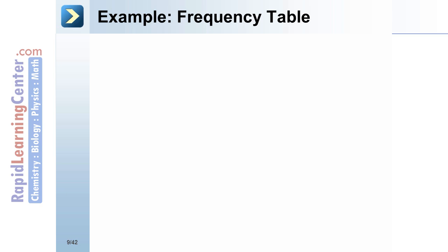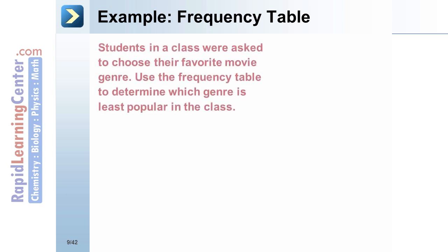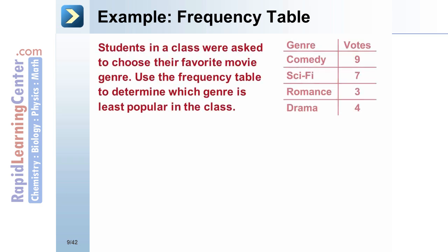Example: Students in a class were asked to choose their favorite movie genre. Use the frequency table to determine which genre is least popular in the class.